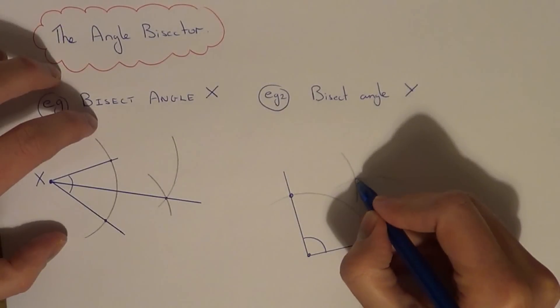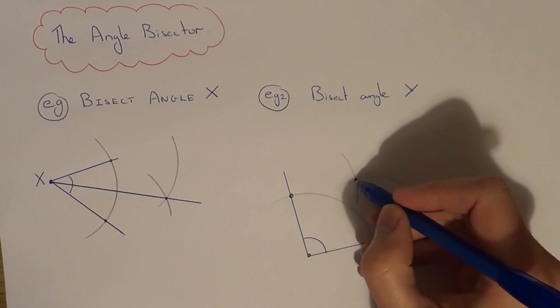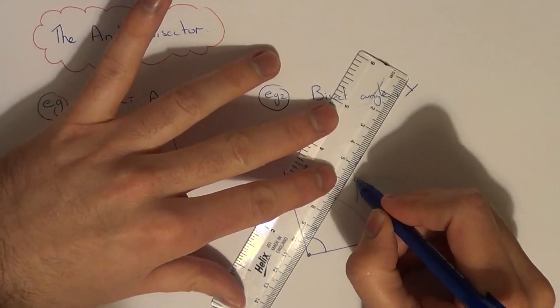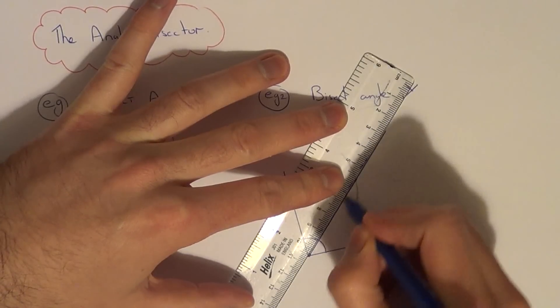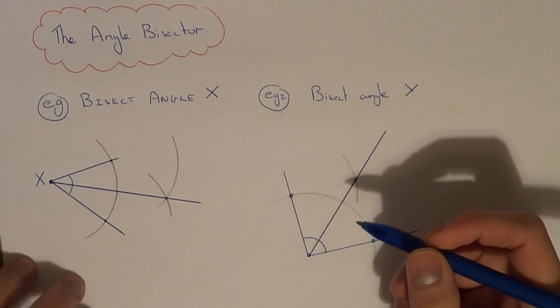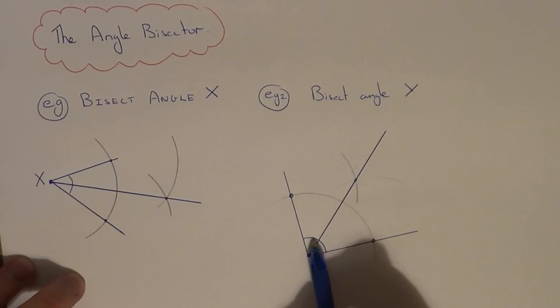Again, you'll get a new intersection point here. So if you join that point back to the centre of the angle, you'll have this line which goes exactly through the original angle.